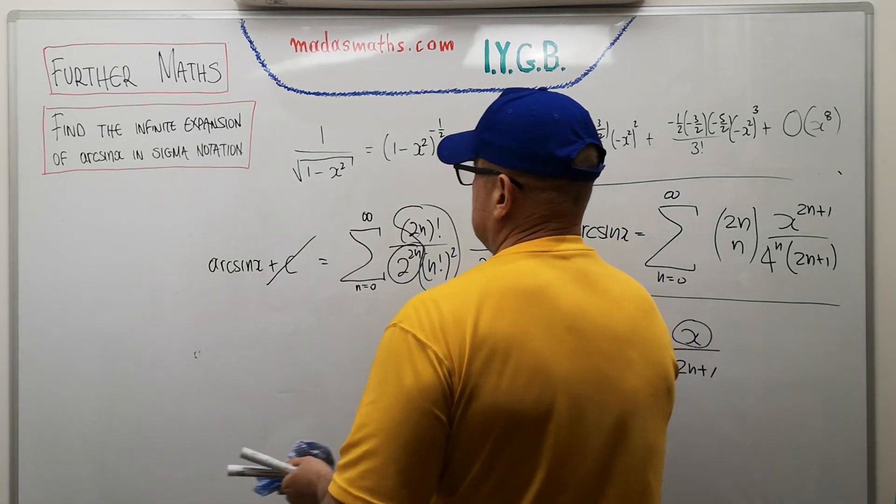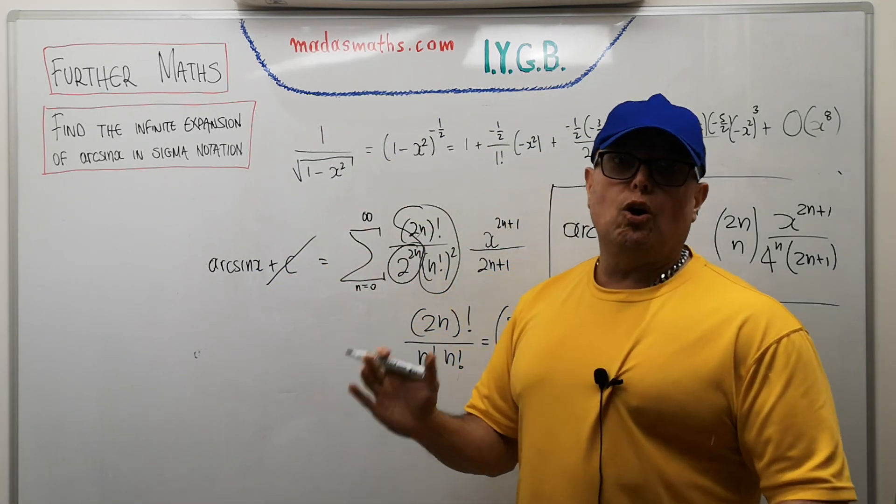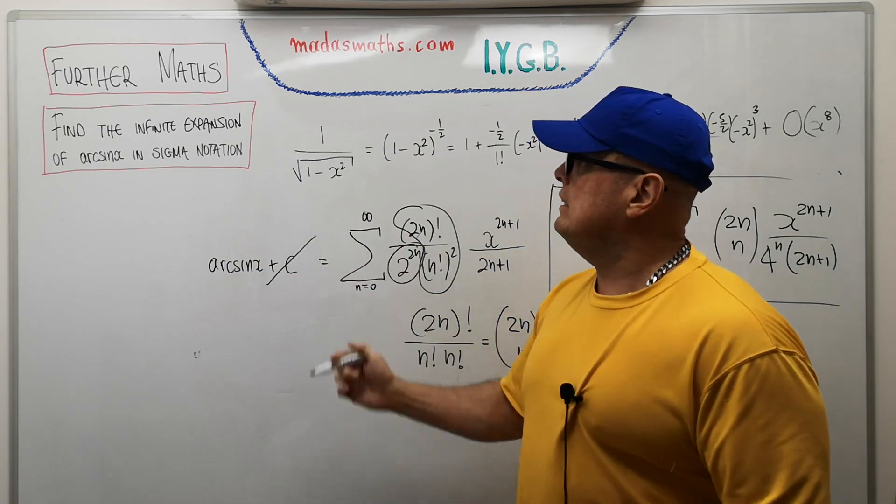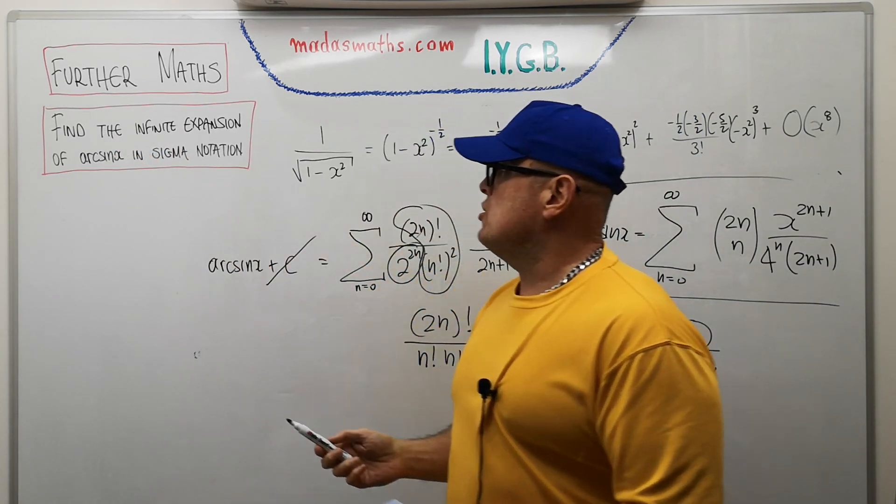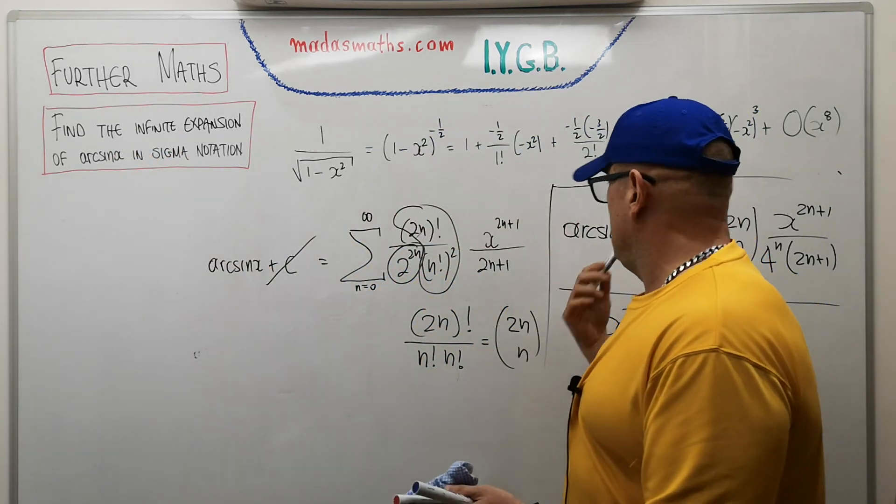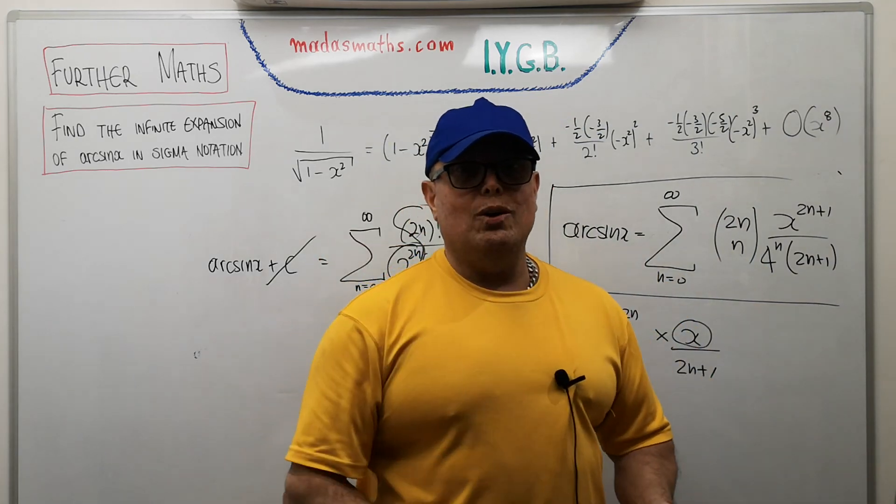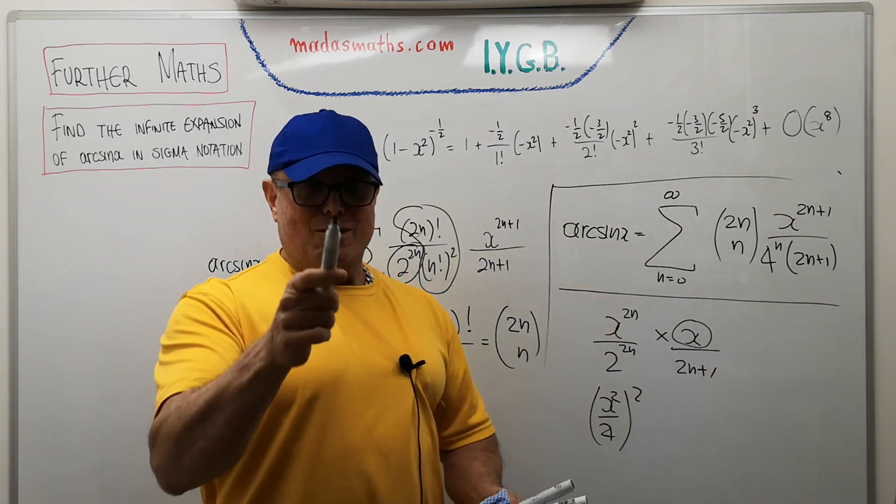Okay, I hope you found that interesting, particularly the manipulation factorials, and it all made sense. We achieved what we have to achieve. Find the infinite expansion of the arcsin in sigma notation. It's right behind me. I hope you enjoyed it. I hope you join me soon. And who's laughing now?